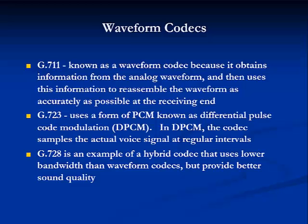Codecs convert analog voice signals into digital forms. They can be divided into three types: waveform codecs, vocoders, and hybrid codecs. The PSTN uses a simple pulse code modulation, or PCM, technique — a waveform codec known by its ITU standard as G.711 — which provides excellent sound quality but requires 64 kilobits per second of throughput. VOIP networks use codecs that conserve bandwidth but provide lesser sound quality than G.711, require more processing resources, and introduce some delay. Examples of VOIP hybrid codecs include G.723, G.726, G.728, and G.729, each using a different technique resulting in different sound qualities, delays, and processing burdens.